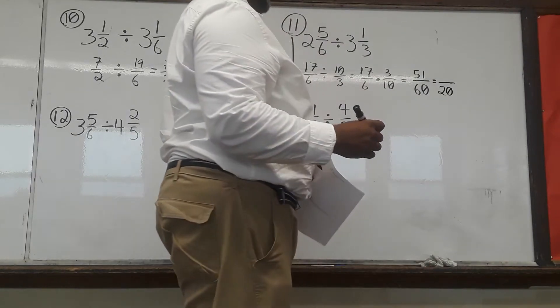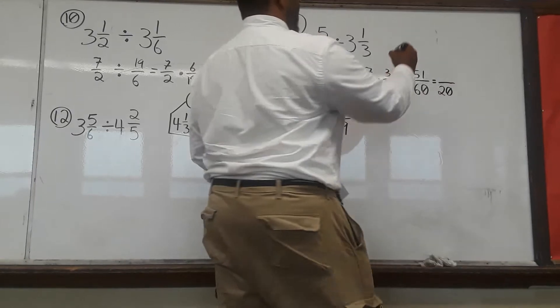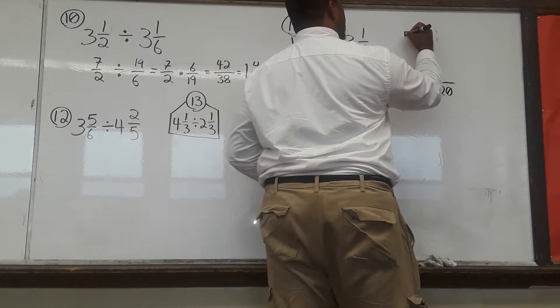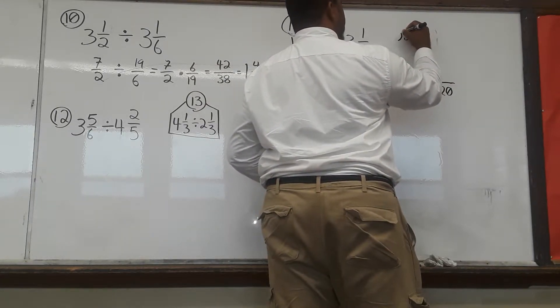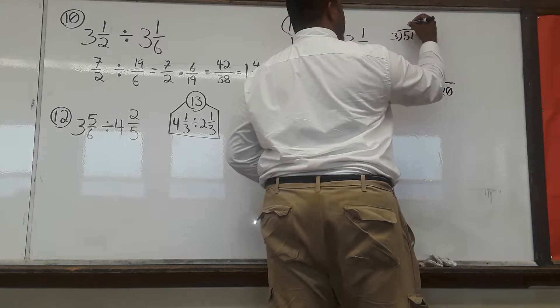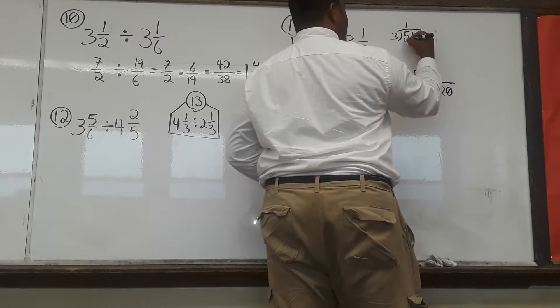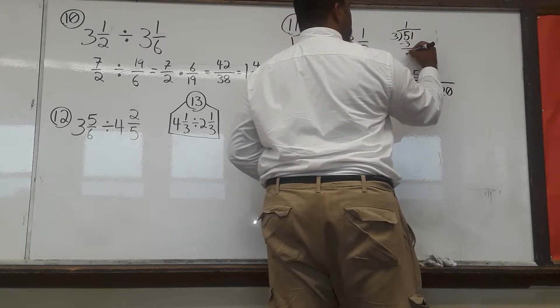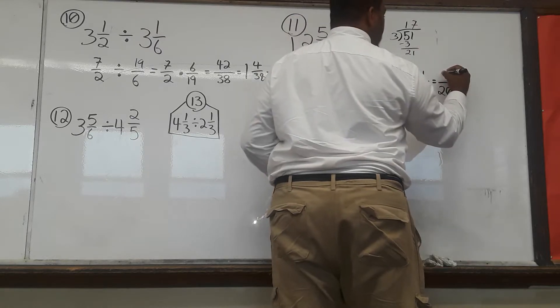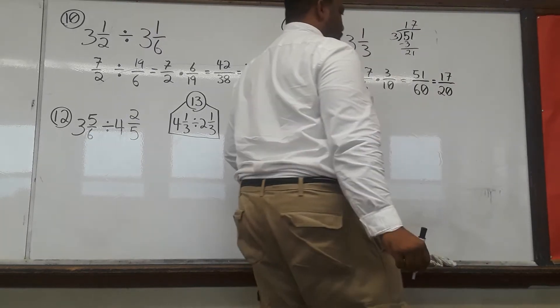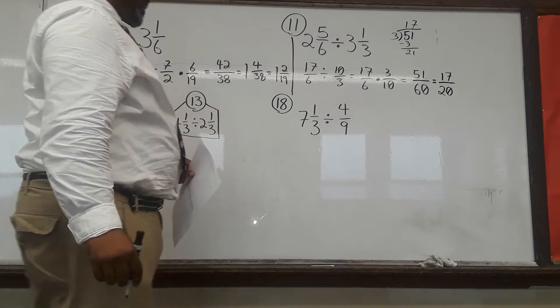And 51 divided by 3 leaves me with, I don't know off the top of my head. I probably should, though. 51 divided by 3, 3 goes into 5, 1 times 2 to 1, 17. 17 over 20, which cannot be simplified any further.